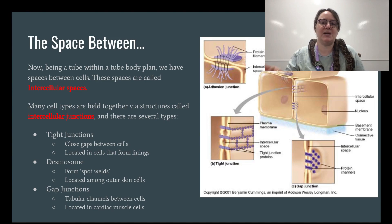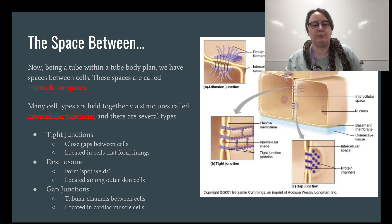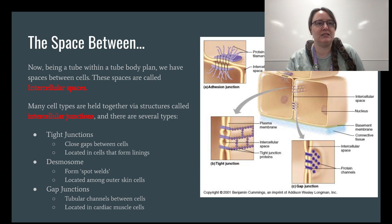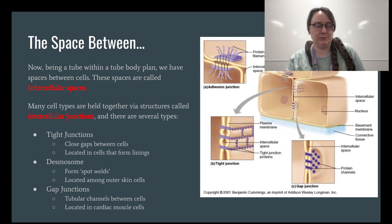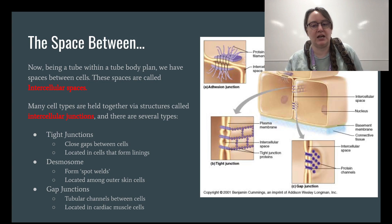How do cells stay together? We're considered a tube-within-a-tube body plan and we have spaces between our cells — these spaces are called intracellular spaces. But that doesn't answer how exactly all the cells stay stuck together. We actually kind of glue them together in different ways — it's more like thinking about welding but in a biological sense. We have structures called intracellular junctions.